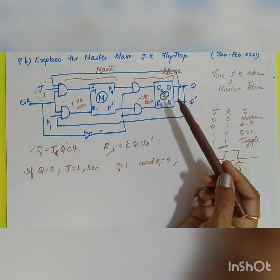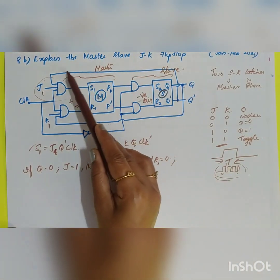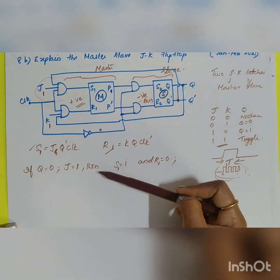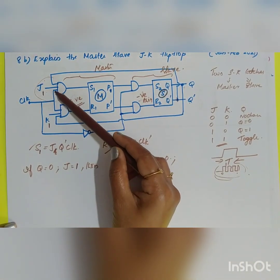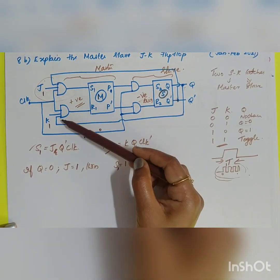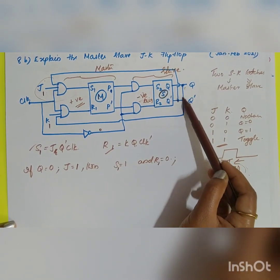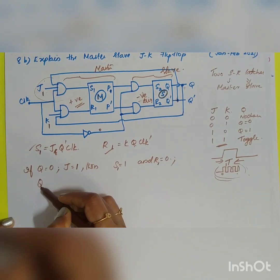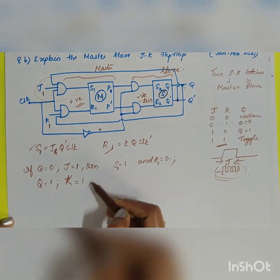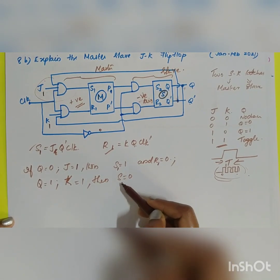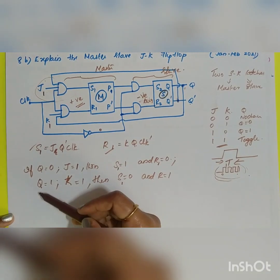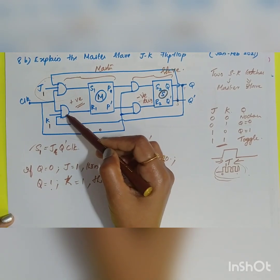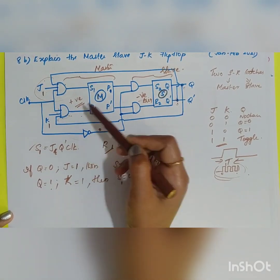If Q=0, then Q̄=1. Since Q̄ is connected to J, and J=1 as well, with clock=1, all inputs to the AND gate are one, so S1=1. At the same time, R=0 because Q=0 is fed into the second AND gate, giving zero output. Conversely, if Q=1, then K=1 means S=0 and R=1.